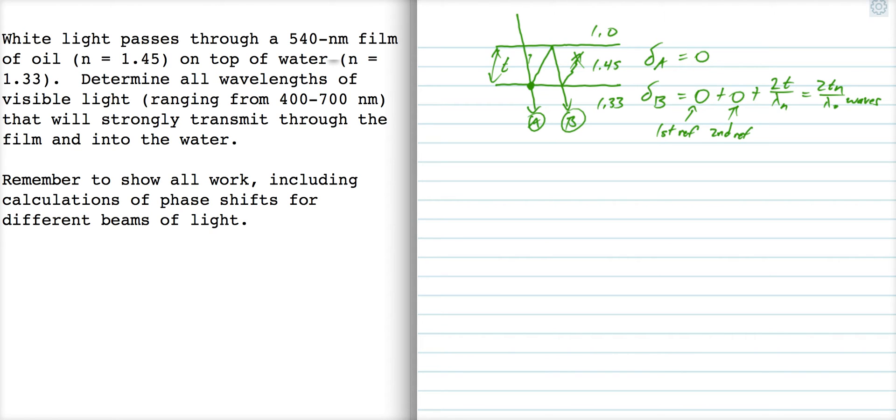Now, we need to find what wavelengths will strongly transmit. So what we're going to do is we're going to set delta B minus delta A equal to the condition of constructive interference, which is 0, 1, 2, 3 waves. We want to find visible light. We want to solve for the wavelength and we want to find which condition gives us the wavelength in the visible light. So let's start.